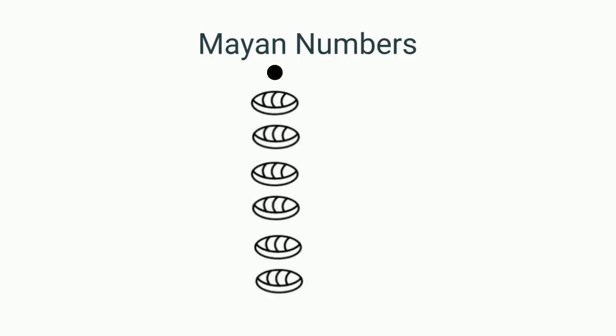Now think about a 1 or a dot in the seventh place value, so a 1 or a dot with six 0s or shells behind it. What is the value of this number?